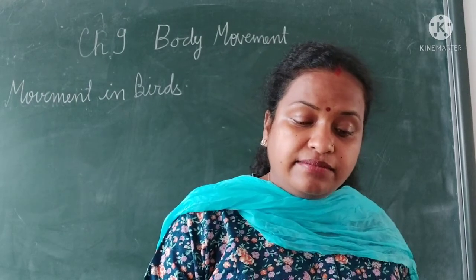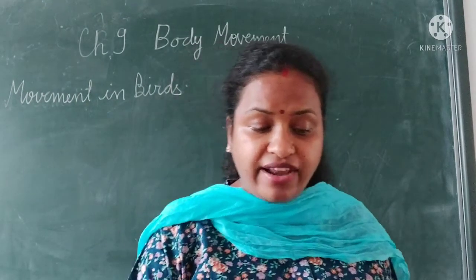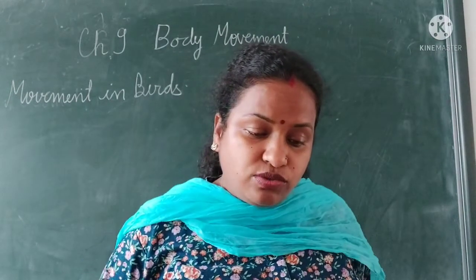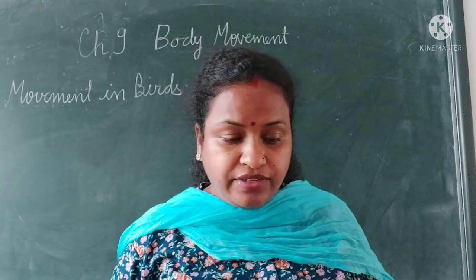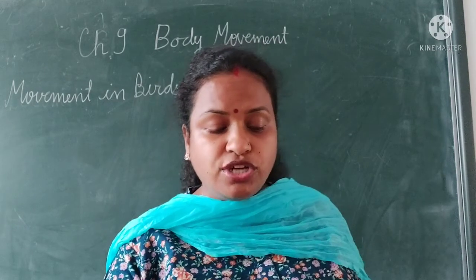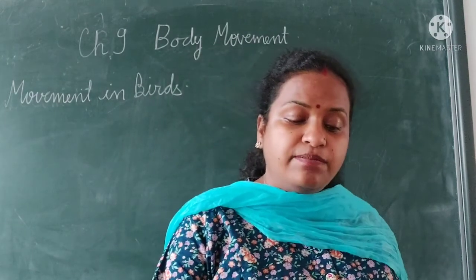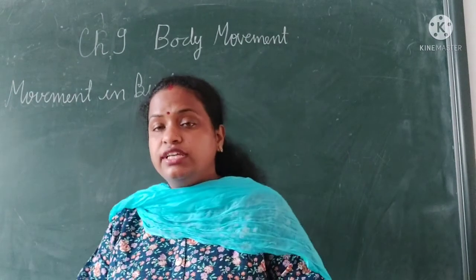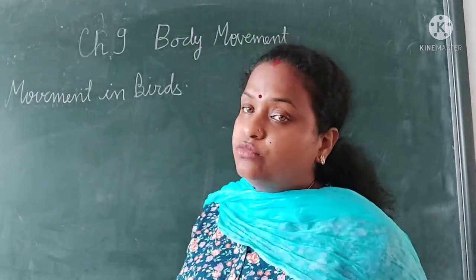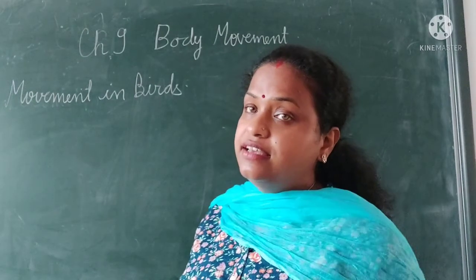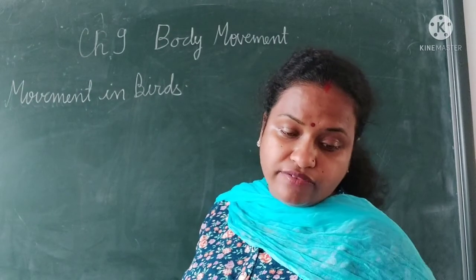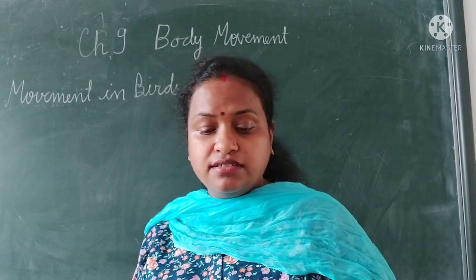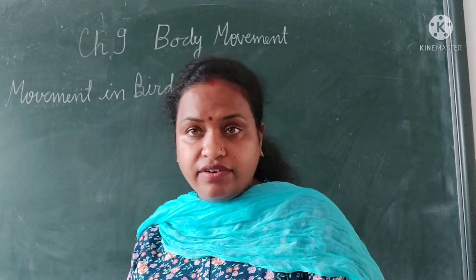Their muscles are powerful for flapping the wings. When a bird flaps its wings, air is pushed downward, which produces an opposite force on the wings and lifts the bird into the air. This is similar to how streamlined fish pass water backward to move forward. That's all for this topic. Thank you, students, and have a good day.